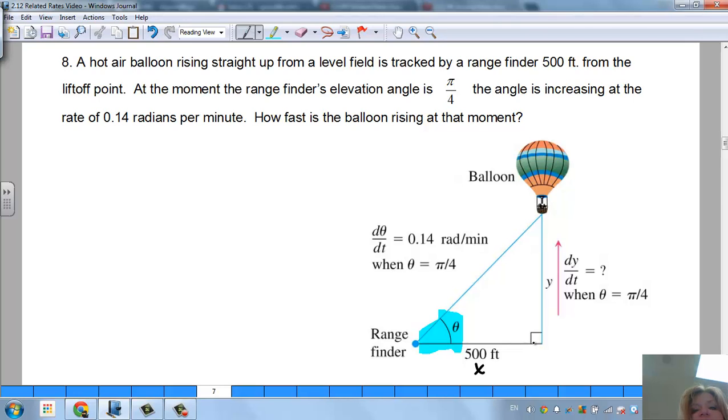At the moment the range finder's elevation of the angle is π/4, so they're telling us the angle is π/4. The angle is increasing at a rate of 0.14 radians per minute. So they're telling us basically that this range finder, it's changing as the balloon is rising because the balloon is going up. So the angle is, so they told us basically that dθ/dt is going to be 0.14 radians per minute, and it's going to be positive because it's going to be increasing because it's following the balloon up.